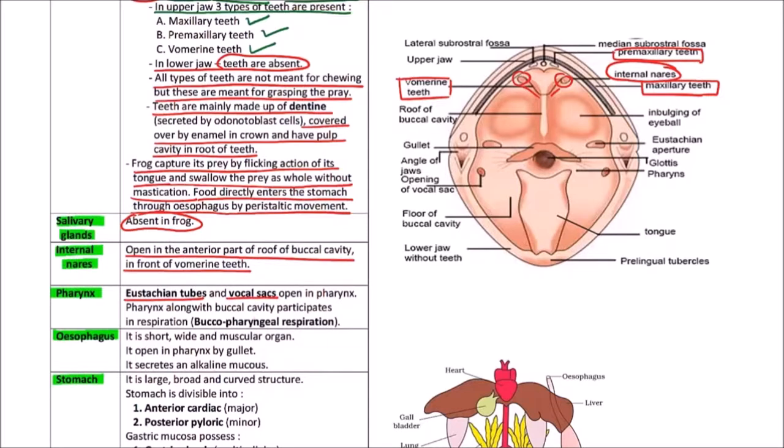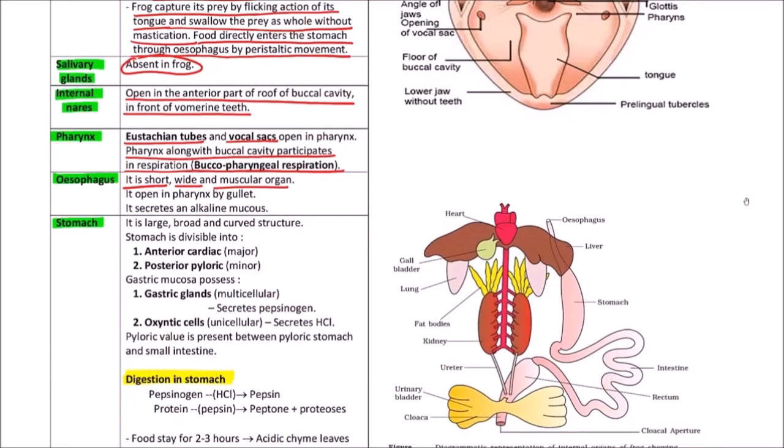Next is pharynx. Eustachian tubes and vocal sacs open in pharynx. Pharynx along with buccal cavity participates in buccopharyngeal respiration. Esophagus is short, wide, and muscular organ. We can observe esophagus in this diagram. It opens in the pharynx anteriorly and secretes alkaline mucus but doesn't secrete any digestive enzyme. Stomach is large, broad, and curved structure. The stomach is divisible into anterior cardiac and posterior pyloric region.